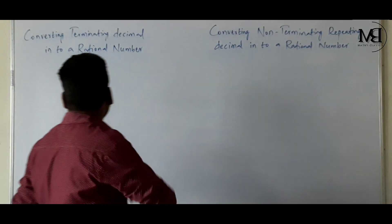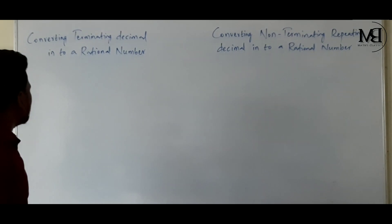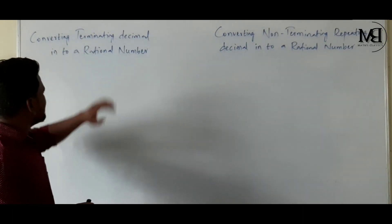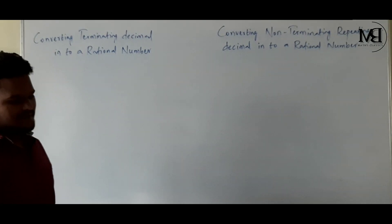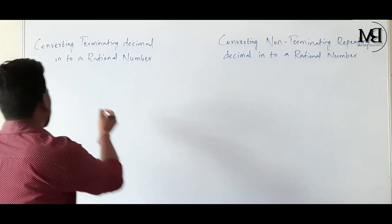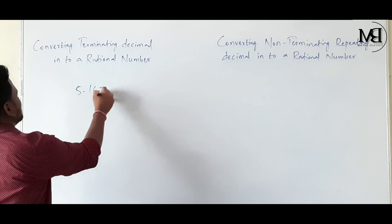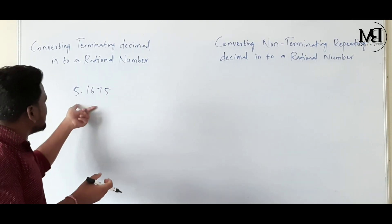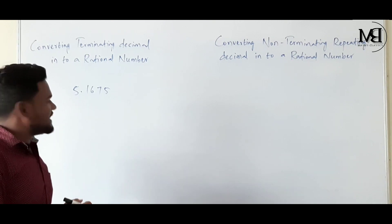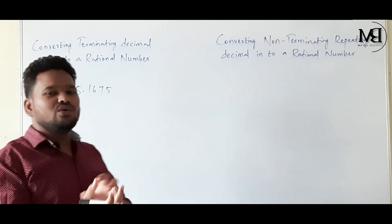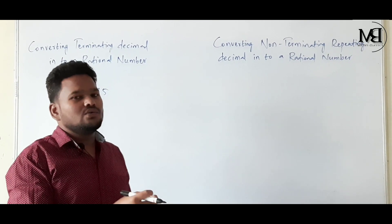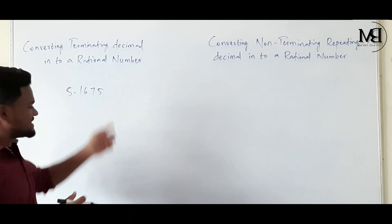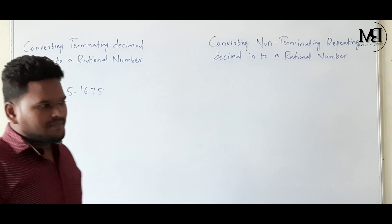First, converting terminating decimal into a rational number. Let us take one example: 5.1675. We are going to convert this terminating decimal 5.1675 into a rational number, means into P by Q form.